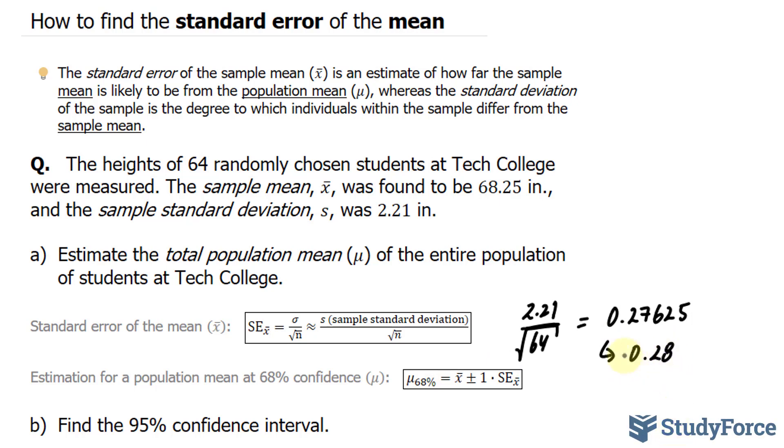Now, to use this to find the average population represented by mu, I'll use the following formula, where mu at 68% confidence is x bar plus minus 1 times the standard error that we just found. This will predict that there is a 68% chance that mu, the average mean, will fall within this particular range. Let me show you what I mean.